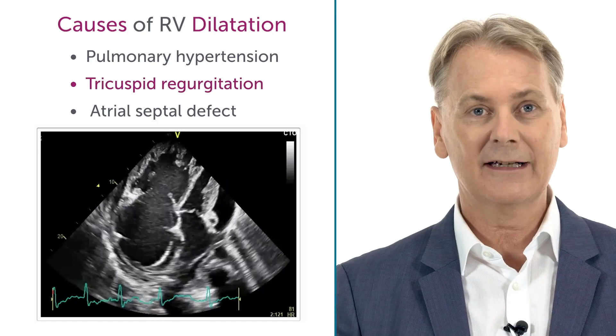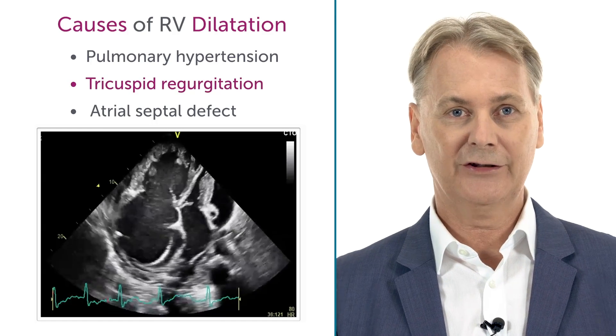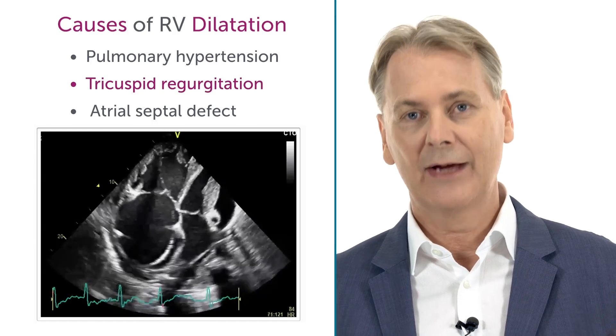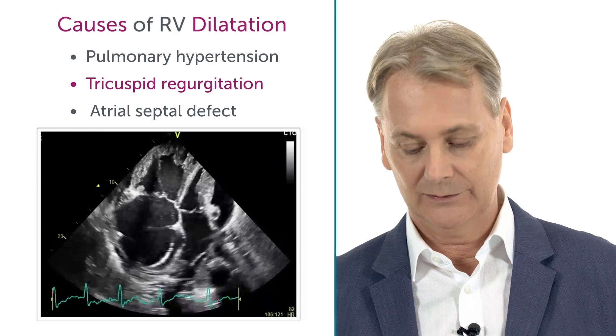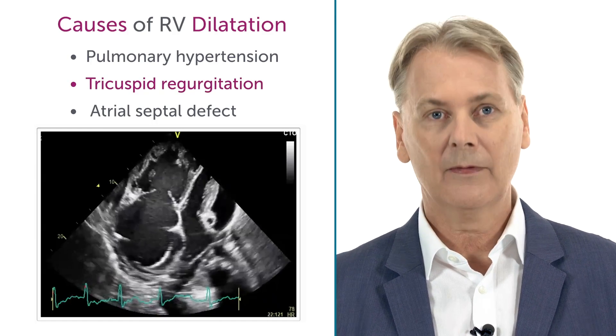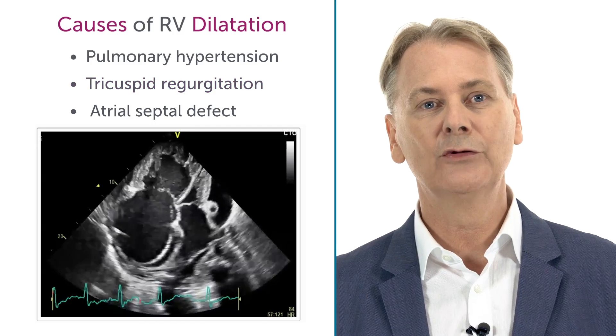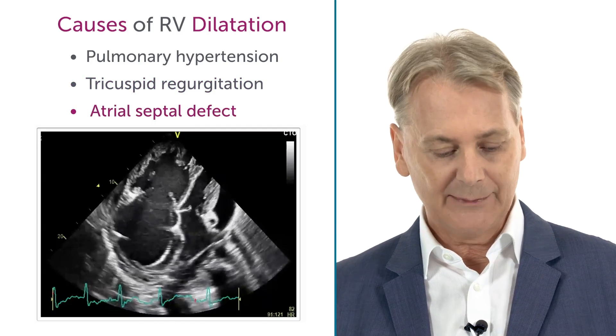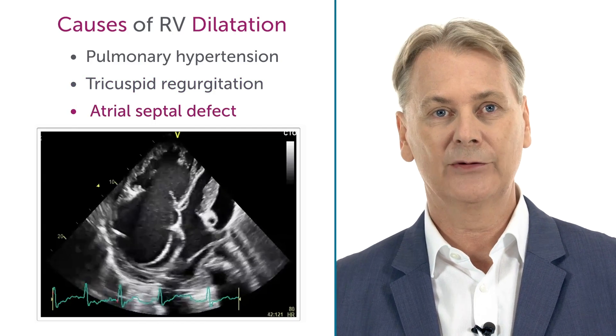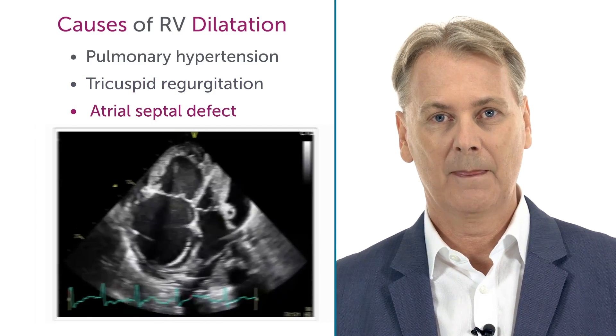In tricuspid regurgitation, we have volume overload. The same holds true for an atrial septal defect — you will also have volume overload.